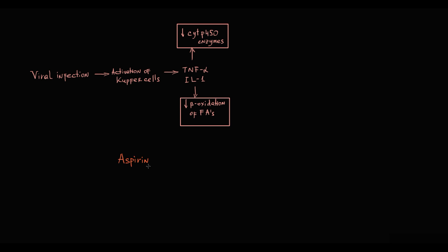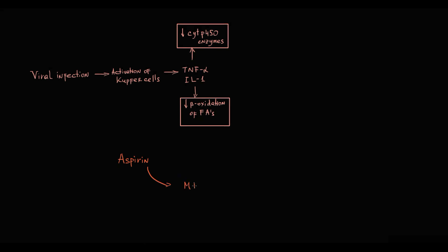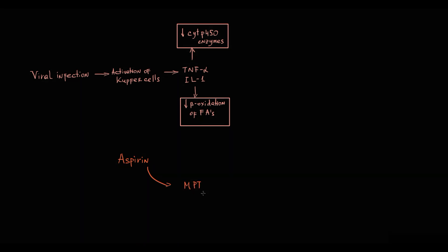Aspirin is a well-known mitochondrial poison. Aspirin can induce opening of pores on inner mitochondrial membrane, resulting in rapid increase in permeability called mitochondrial permeability transition. Recall that in normal state, inner mitochondrial membrane is impermeable.